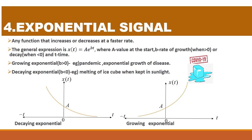The next signal is the exponential signal. Any function that increases or decreases at a faster rate can be represented as an exponential signal. The general expression is x(t) = A·e^(bt). Here A is the value at the start — at t = 0 — and b is the rate of growth. If b > 0 it is a growing exponential; if b < 0 it is a decaying exponential.